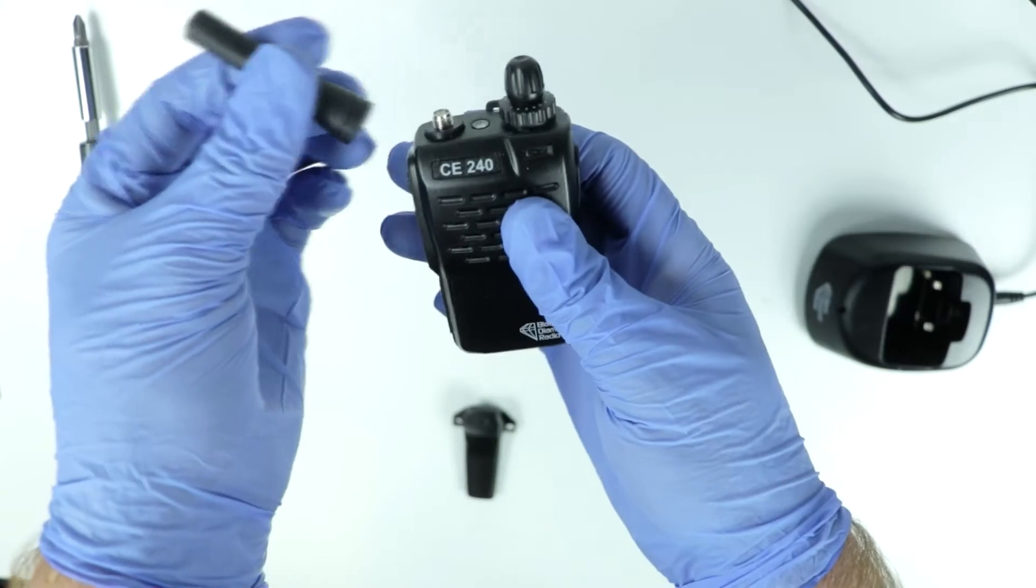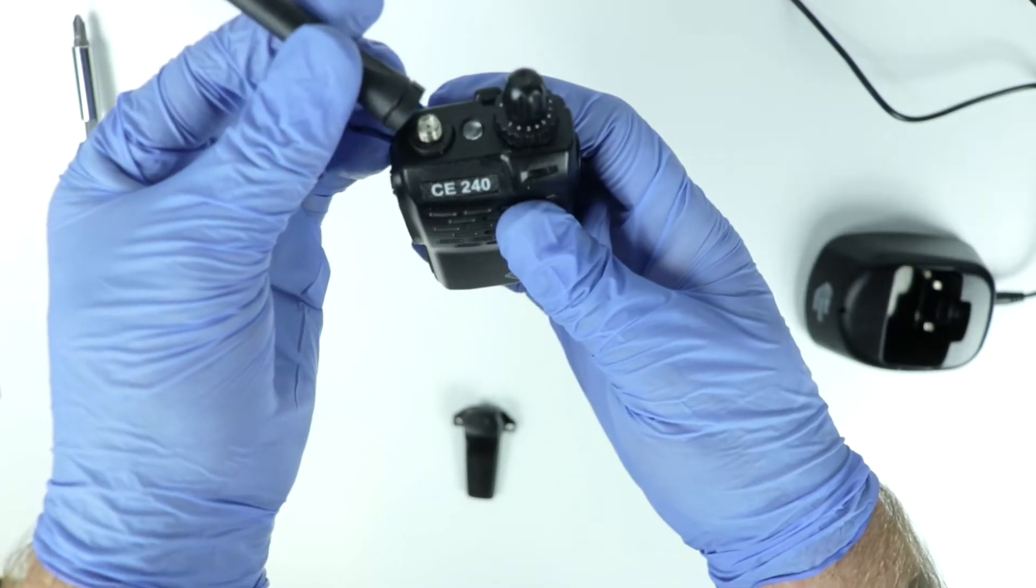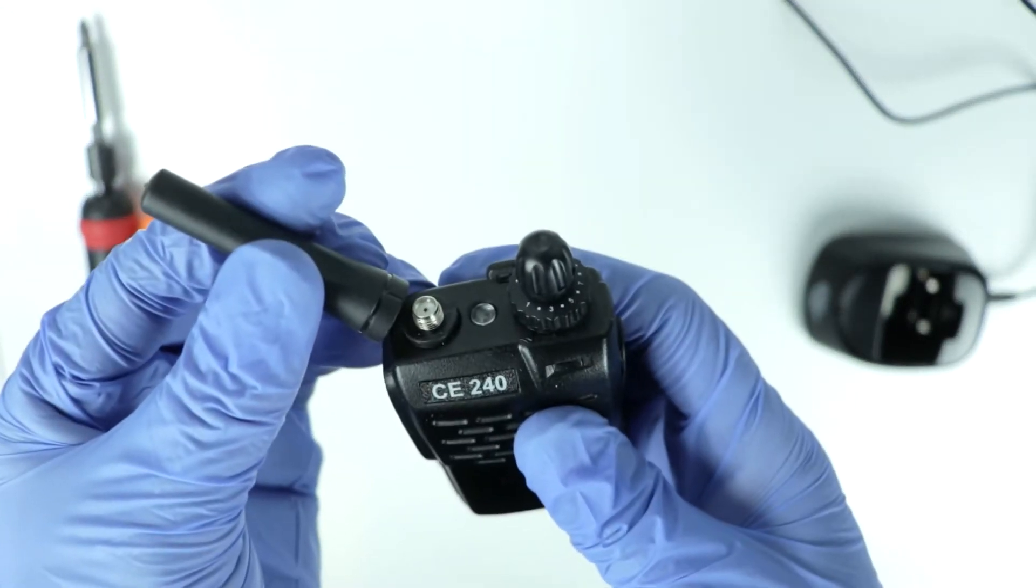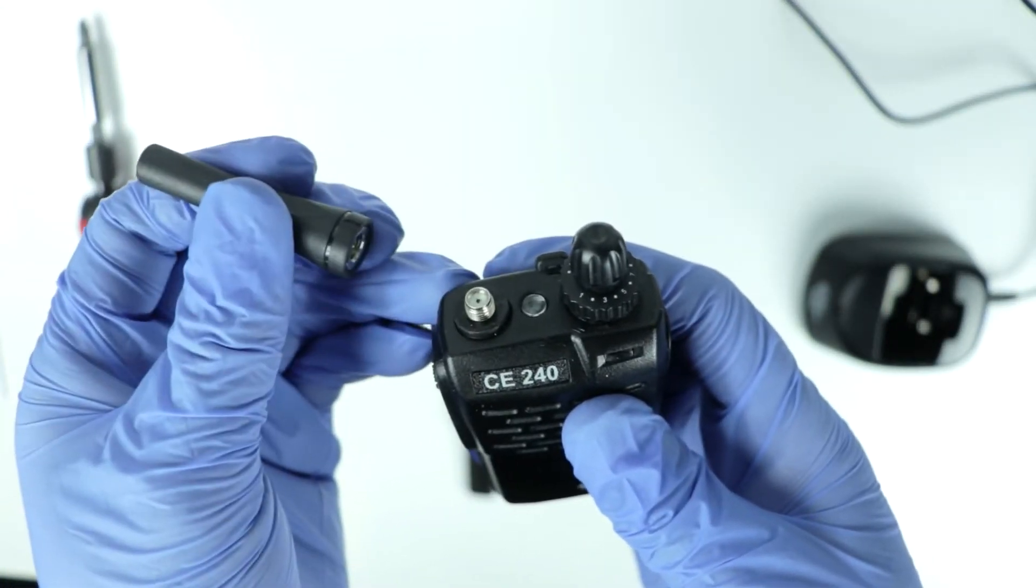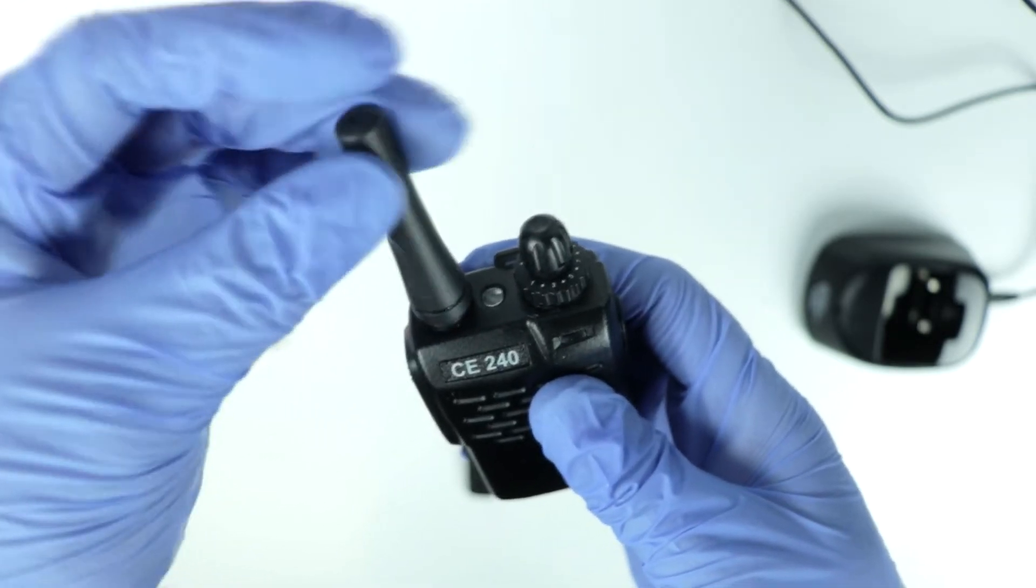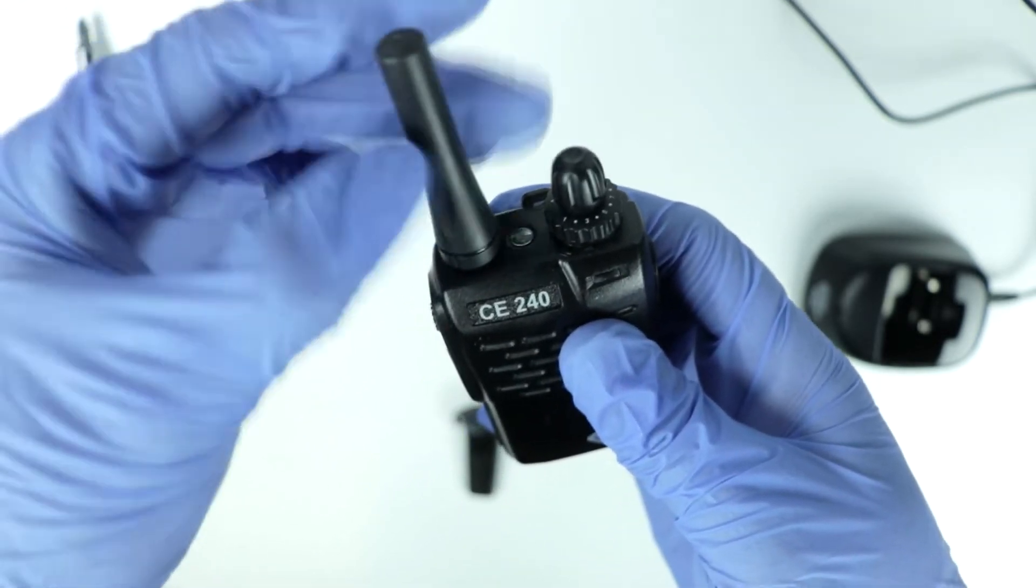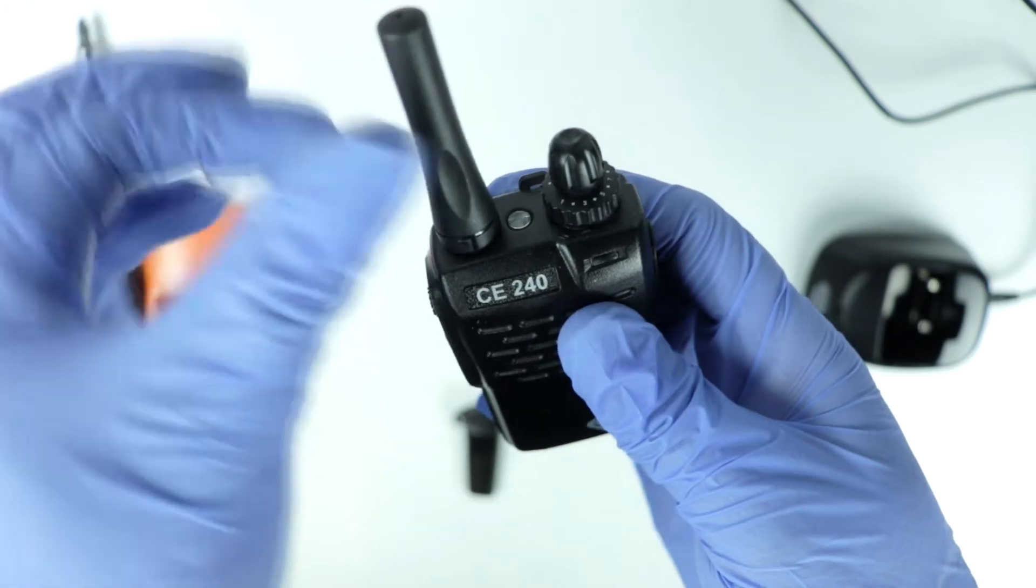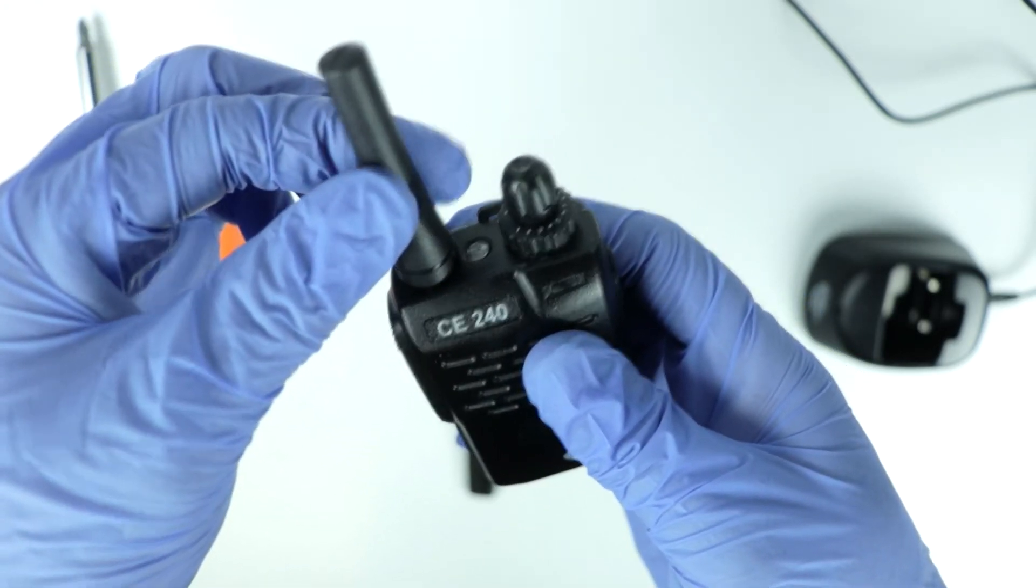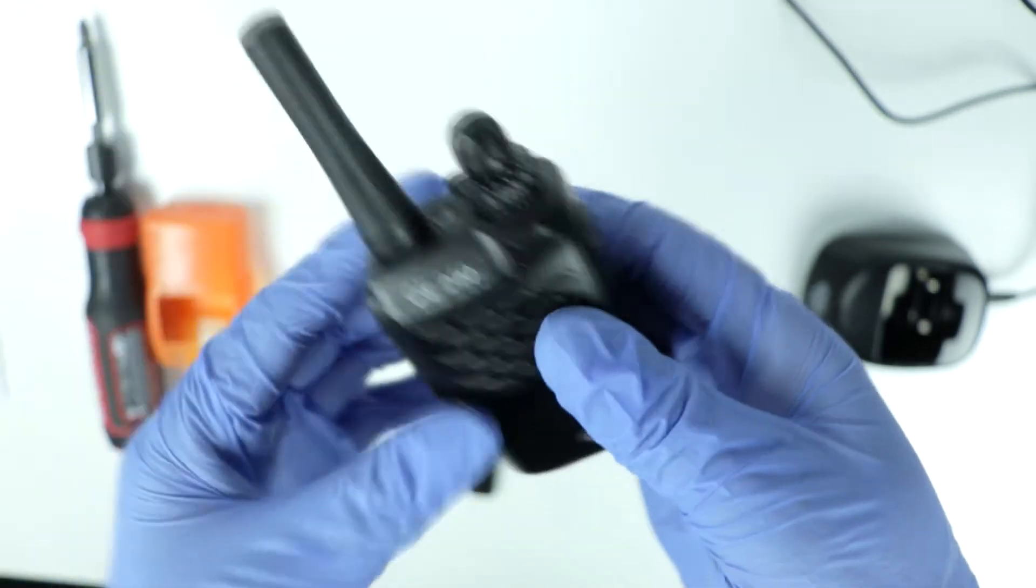Next we're gonna go ahead and install the antenna. On top of the radio you will notice that there is a metal antenna mount with threads on it. The antenna simply screws onto this mount. There's a rubber ring around the mount, and we don't want to over-tighten this and strip the threads, so we're gonna tighten it down to the rubber ring and then give it about a quarter to a half turn just to ensure that it's tight enough that it doesn't work its way loose over time.